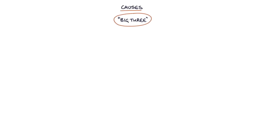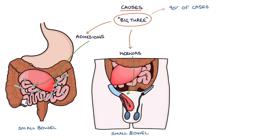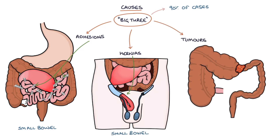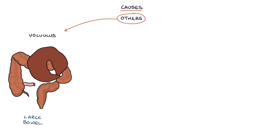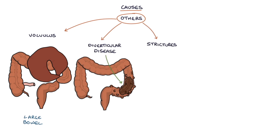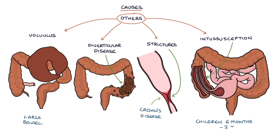The big three causes that account for around 90% of cases of bowel obstruction are adhesions, which affect the small bowel; hernias, which typically affect the small bowel; and tumours, which most often affect the large bowel. Other causes include volvulus which affects the large bowel, diverticular disease, strictures for example secondary to Crohn's disease, and intussusception which affects young children aged 6 months to 2 years.